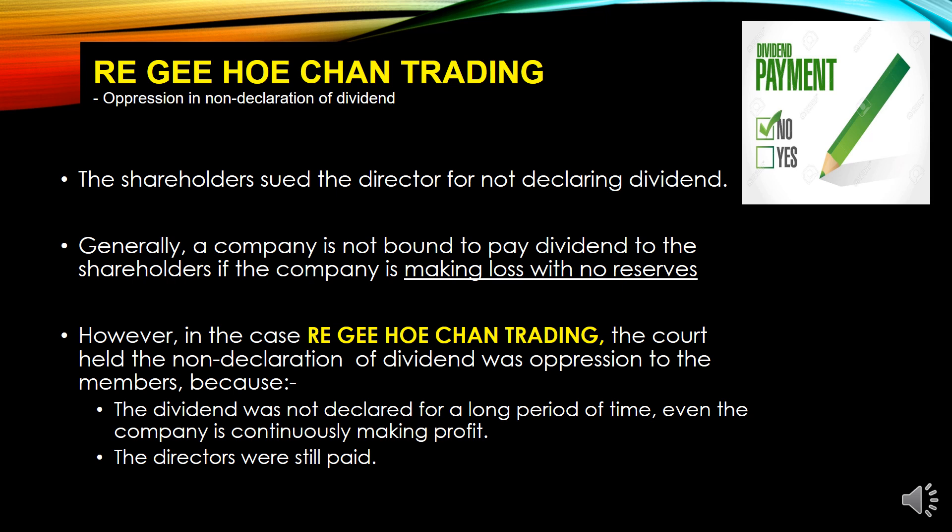But what about a company that continuously makes profit? In this case, the company made profits continuously, and the directors received their payments and benefits — but they never declared dividends. Only the directors enjoyed the profit; the members had no chance to enjoy the profit through dividends. The members went to court and claimed oppression. After many years of making profit, the directors never declared a dividend. The court agreed with the members.